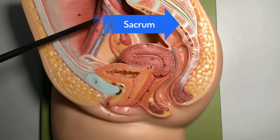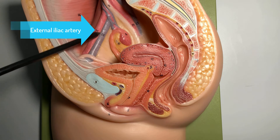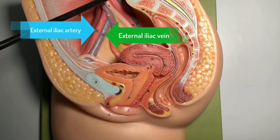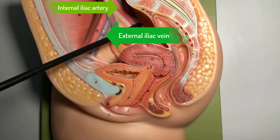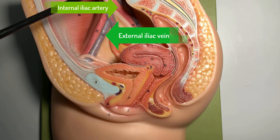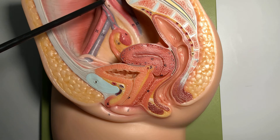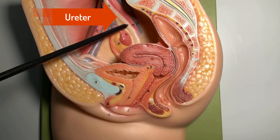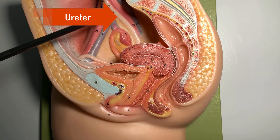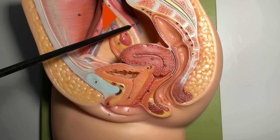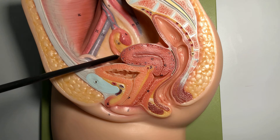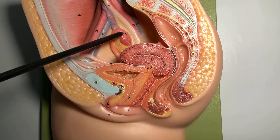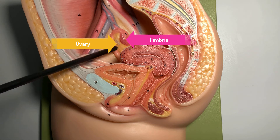The most posterior structure is the sacrum. Coming down into the cavity, you can see the external iliac artery and vein, the internal iliac artery and vein, and the common iliacs. The pearly white structure coming down is the ureter.